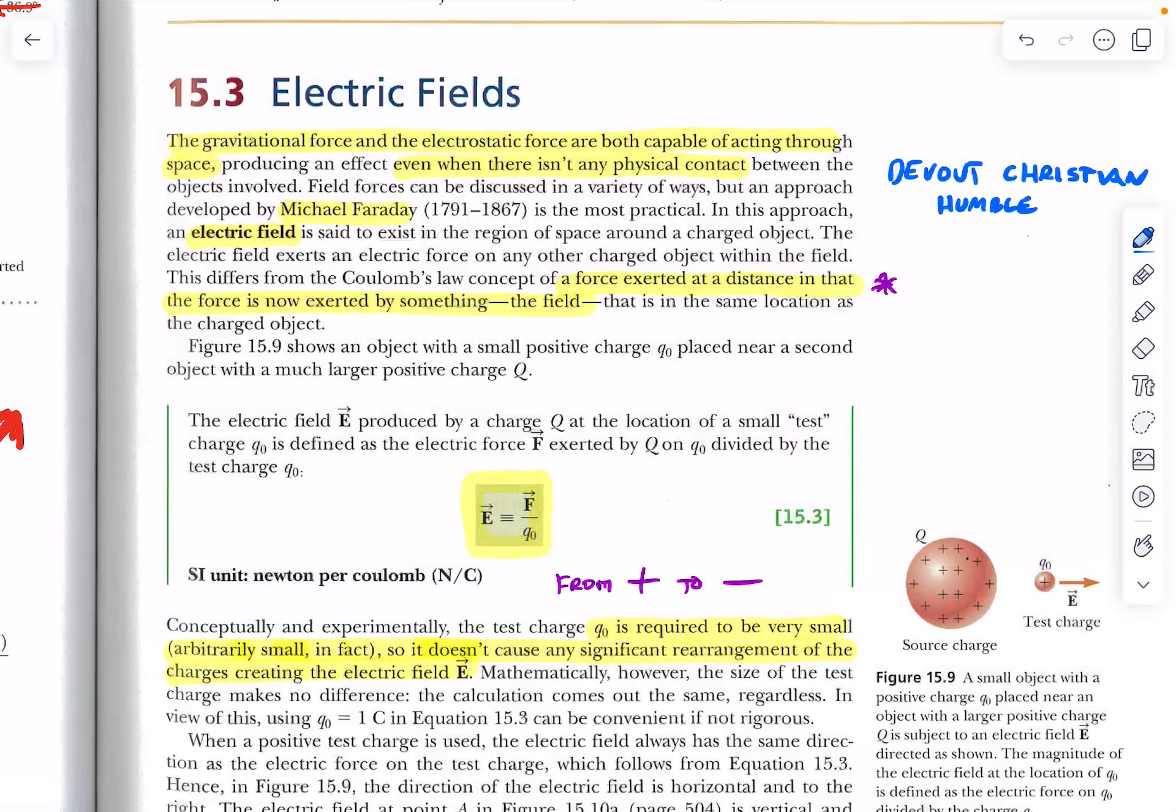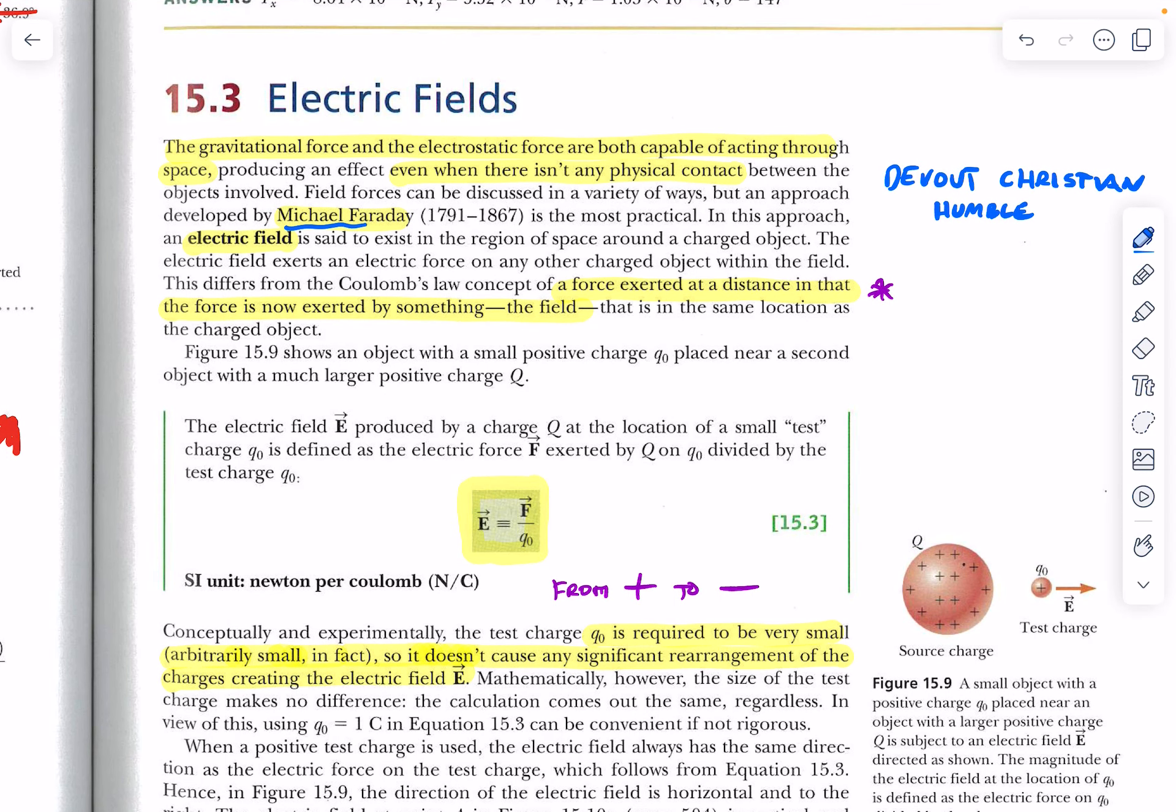Number two for chapter 15, we'll be looking at electric fields, as you can tell by the title. And we begin with probably one of the most famous experimental physicists and chemists of the 19th century, Michael Faraday. Probably one of my all-time favorite people in the history of science, and you're going to see his work here.